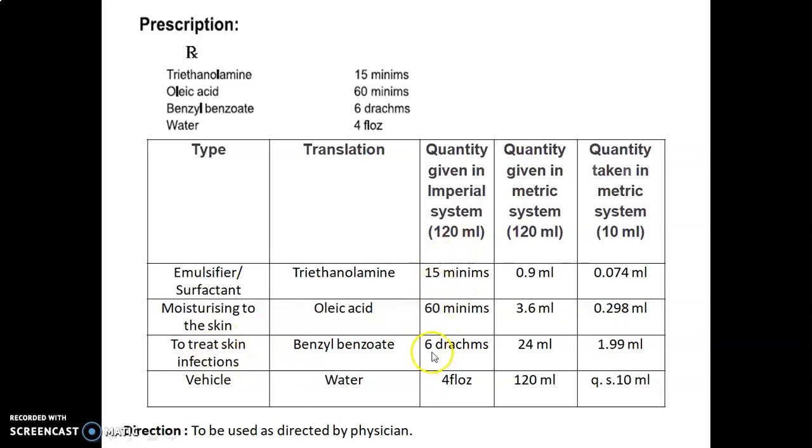Benzyl benzoate is used to treat skin infections. Quantity given in imperial system is 6 drachm. As one drachm equals 4 ml, 6 times 4 equals 24 ml, and quantity required to prepare 10 ml is 1.99 ml. Water is used as a vehicle. Quantity given in imperial system is 4 fluid ounces. As one ounce equals 30 ml, 4 fluid ounces equal 120 ml. Quantity taken is quantity sufficient to prepare up to 10 ml.